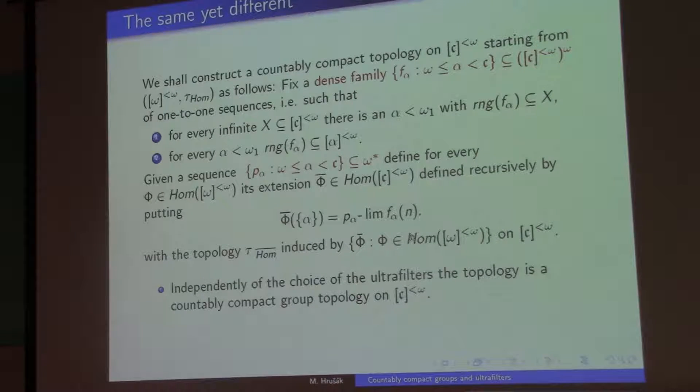So this can be done, so if I do it recursively, I will define the homomorphism on all the singletons, and therefore it has a unique extension to the homomorphism on the whole group. And then I can look at the topology, which is generated, induced by all these extensions of the base homomorphisms. Now, if I started with a dense family, it doesn't matter which sequence of ultrafilters I take, this is always going to be a countably compact group. It's going to be a group because it's defined by subgroups.